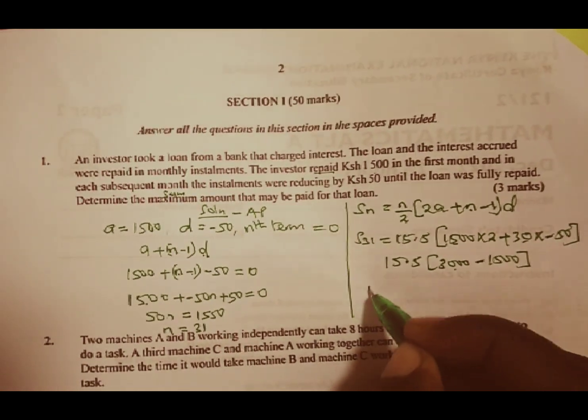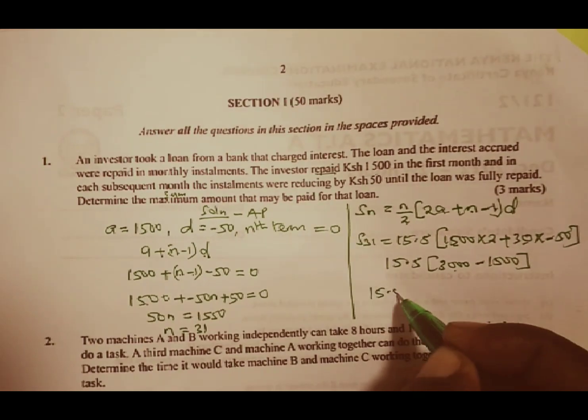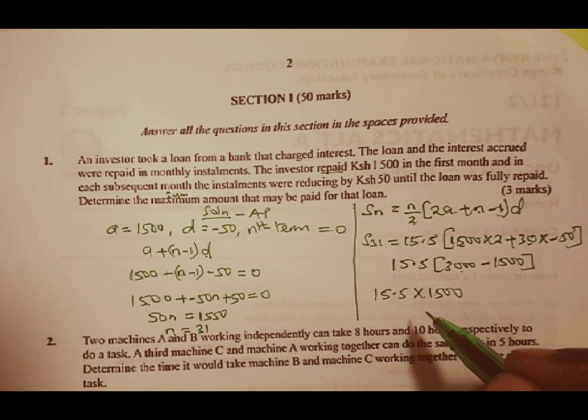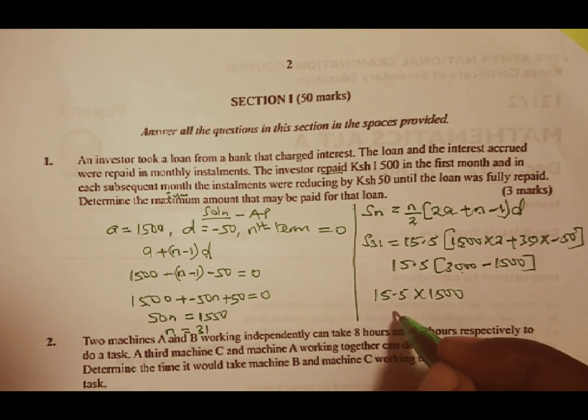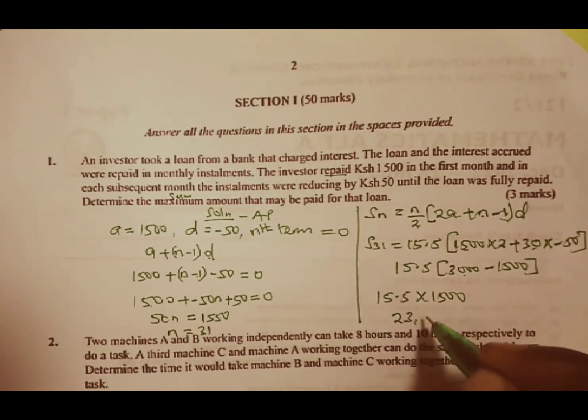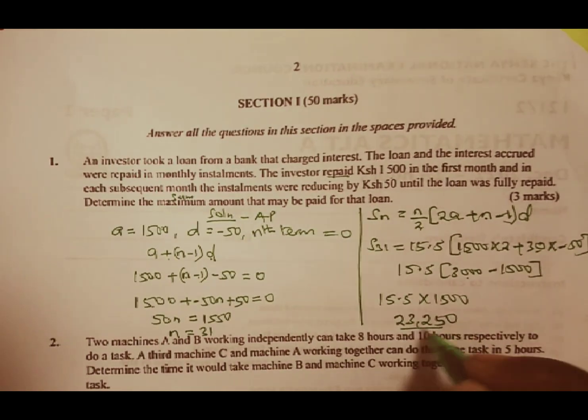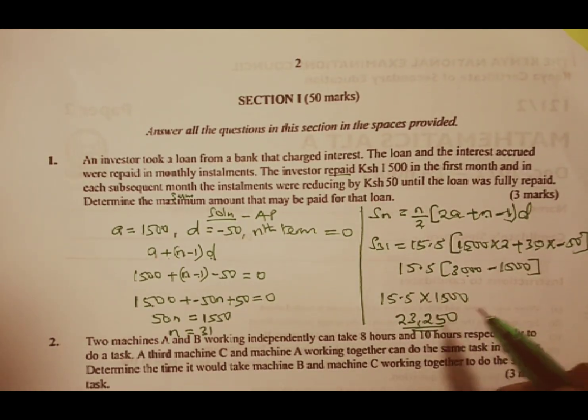And therefore, our final answer is going to be equal to 15.5 multiply by 1500, giving us a total of 23,250 as the total amount of money that was paid for that particular loan.